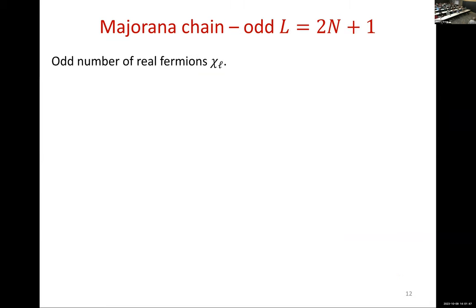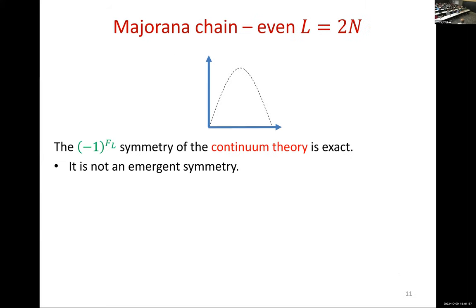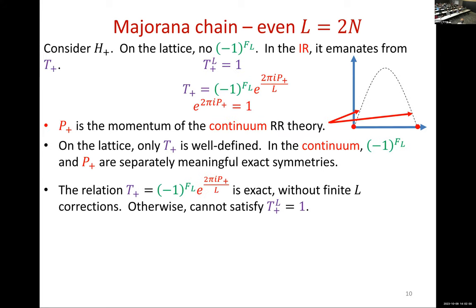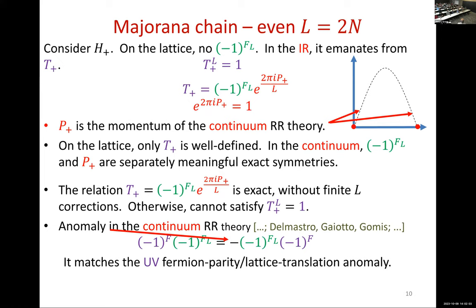The mass term is even under continuum translation, but recall the continuum translation and lattice translation are not the same operator — they differ by the factor (−1)^{F_L}, and indeed the mass term is odd under (−1)^{F_L}. This explains the puzzle of how we landed on a massless theory without fine tuning. Requiring lattice translation invariance guarantees that we have massless fermions and the model is gapless at long distances. The UV anomaly between lattice translation and (−1)^F is matched in the IR with an anomaly between (−1)^F and (−1)^{F_L}. So this thing really works very well.